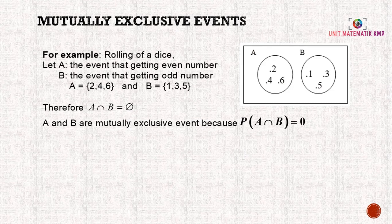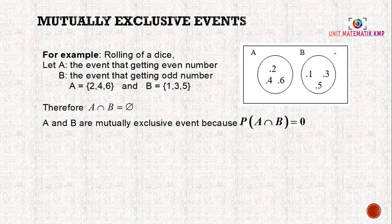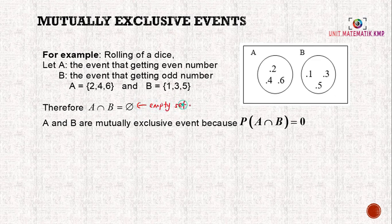For example of a mutually exclusive event: when rolling a dice, let A be the event of getting an even number, and B be the event of getting an odd number. From the Venn diagram, A is {2,4,6} and B is {1,3,5}. Therefore A intersect B is equal to the empty set — it cannot happen at the same time. So A and B are mutually exclusive events because P(A intersect B) = 0.